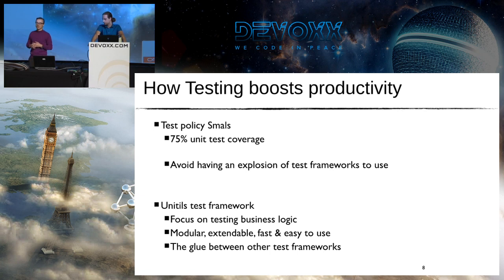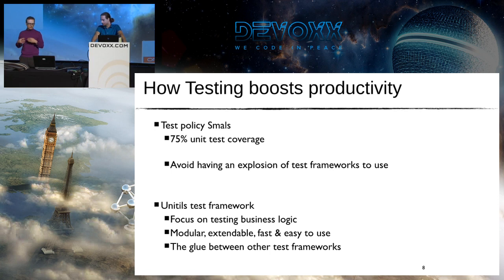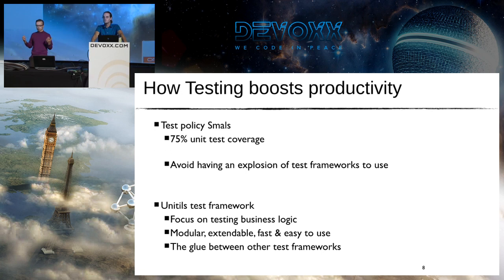At Smalls we have a unit testing policy stating that 75% of every new development should be unit tested. To avoid an explosion of testing frameworks, we evaluated many testing and mocking frameworks and found that Unitils is the best fit for our types of development. Unitils lets you focus on testing business logic instead of writing boilerplate code — it's modular, extendable, fast, and easy to use, which we hope to demonstrate today.